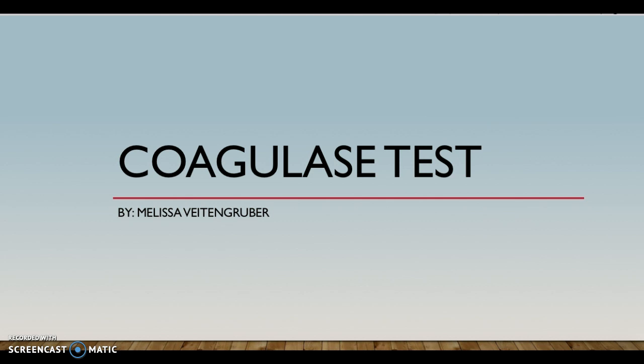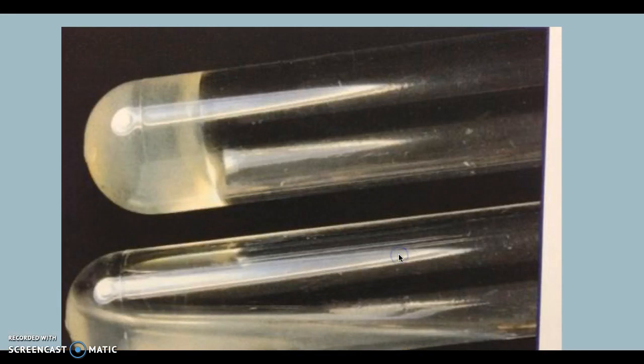After four hours, if the tube is turned into a gel and stays in the gel form, even after tilting the tube, it is a coagulase positive test. None of the substance inside the test should flow like liquid.